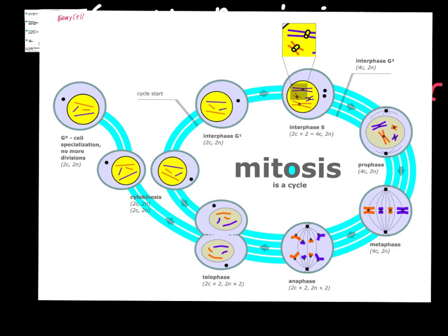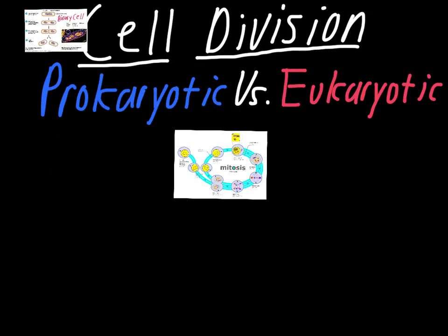It's the same general idea: we start with one cell, the DNA gets copied, and we end up with two new cells at the end. The middle steps are just much more complicated in mitosis because eukaryotic cells are more complicated and have more DNA to deal with.